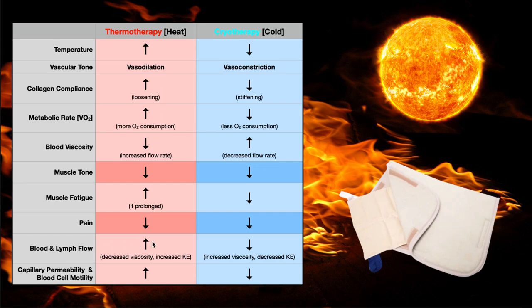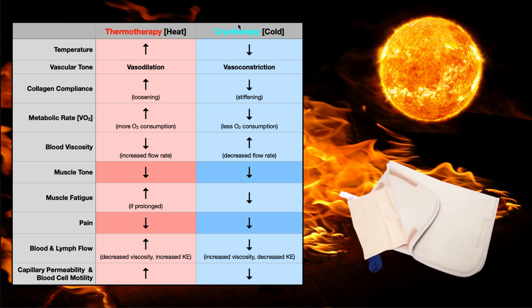Blood and lymph flow increases with thermotherapy. This has to do with generally increased kinetic energy when we heat things up, but also that decreased viscosity and increased flow rate that changes the flow of blood and lymph through the vasculature in that area. Capillary permeability and blood cell motility also increase. If we have pre-existing inflammation, especially if it's excessive, we may not want to use thermotherapy — because with inflammation you already have greater capillary permeability, and using thermotherapy would increase that even more, potentially exacerbating pre-existing inflammation. In that case, we may want to switch to cryotherapy, which will still decrease pain but will decrease capillary permeability and help reduce inflammation.